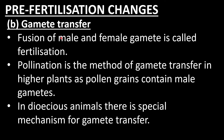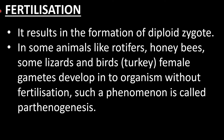Next is gamete transfer. Fusion of male and female gametes is called fertilization. When haploid male and female gametes are formed, they form the diploid zygote. In plants, pollination is the method of gamete transfer in higher plants, as pollen grains contain male gametes. In animals, the special mechanism for gamete transfer is copulation.